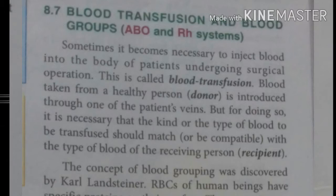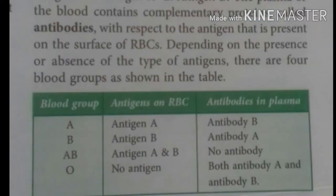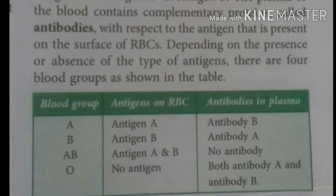Scientists including Karl Landsteiner and others discovered that the entire human population is divided into four major blood groups based on the reaction of blood when mixed together. These groups are designated as A, B, AB, and O.